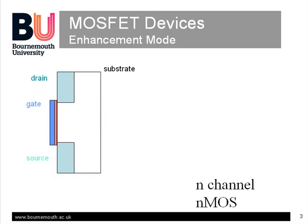The transistor can operate as a linear amplifier or as a digital switch. If a positive voltage difference is applied between the drain and the source, no current can flow. However, if a positive voltage is applied to the gate, this will attract electrons from the highly doped source and drain regions along with minority carriers from the substrate. These will form a thin layer under the gate, which is now acting as a charged-up capacitor.